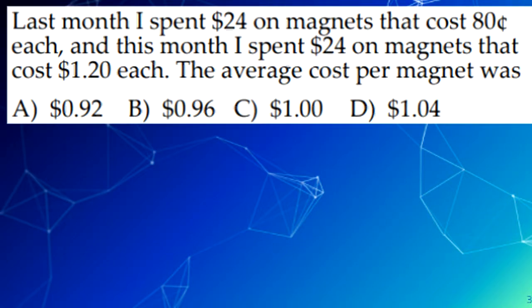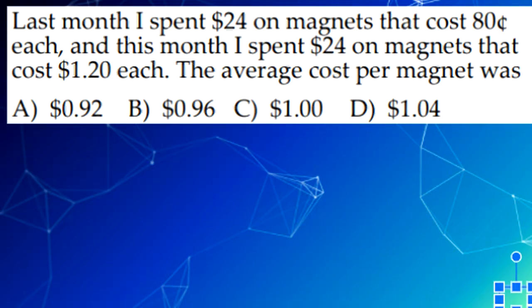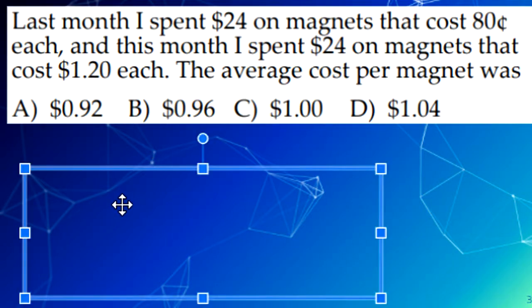The next question is, last month I spent $24 on magnets that cost $0.80 each, and this month I spent $24 on magnets that cost $1.20 each. The average cost per magnet was. So, $24 divided by $0.80 is 30, and $24 divided by $1.20 is 20. Because it's 50 magnets in total and $48 was used, we do 48 divided by 50, which would get $0.96, which would be B.